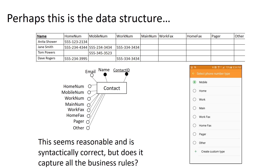So maybe the data structure actually looks something more like this: I have a Contact with a contact ID, a name, and optionally an email address, home number, mobile number, work number, main number, work fax, home fax, pager, and other. This is still syntactically correct and seems pretty reasonable.